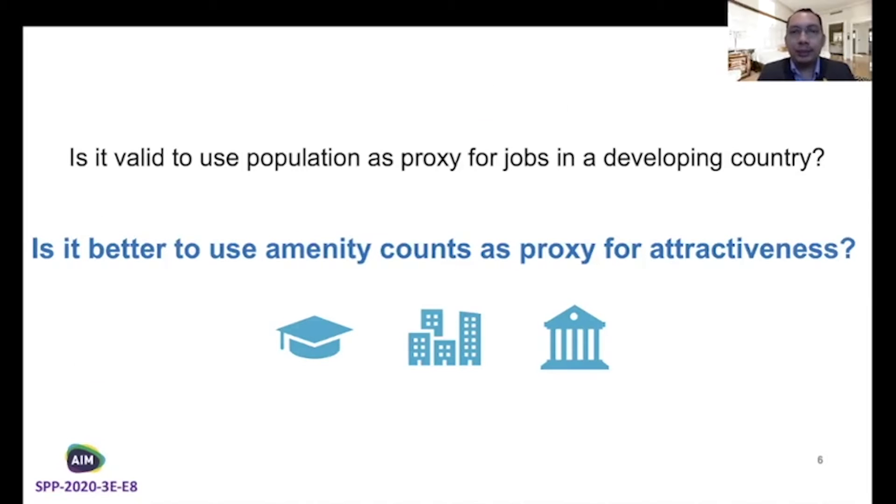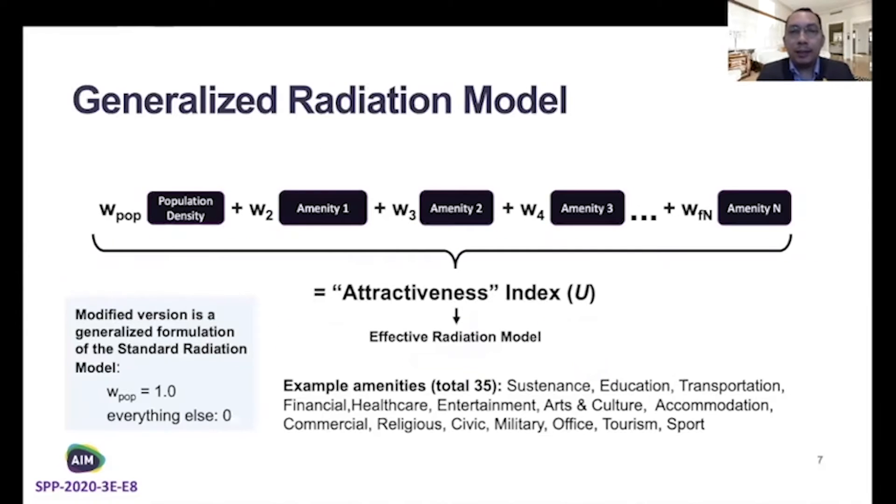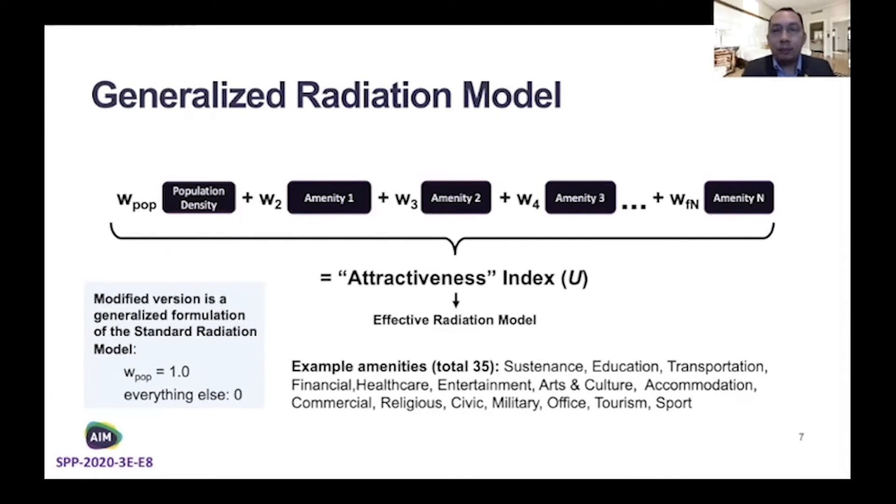We sought to answer these questions. And to do so, we introduced a generalized gravity model. Basically, it's a weighted sum of the population of population density and the individual amenity counts. We use this index instead of population in the original equation earlier. So, what did we find?